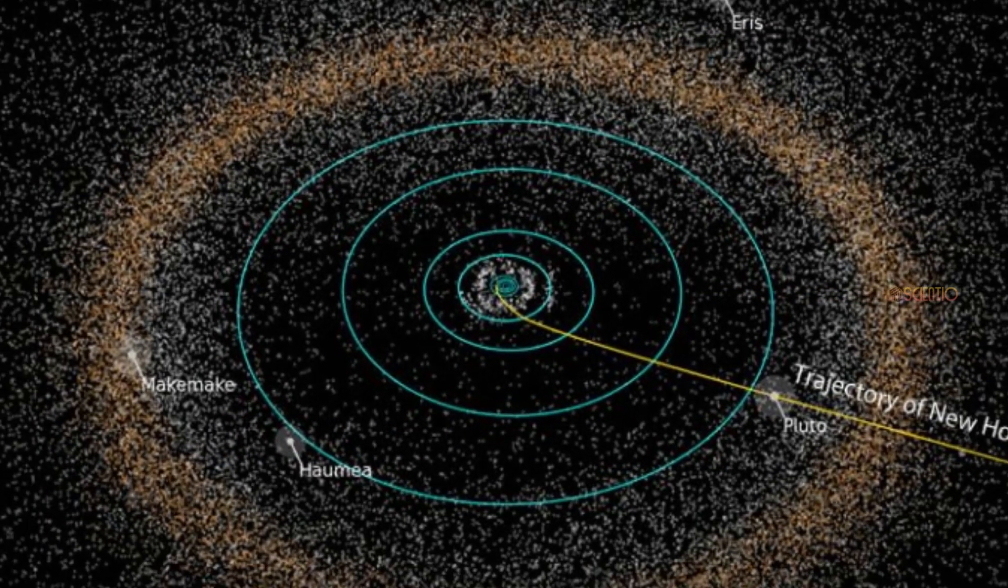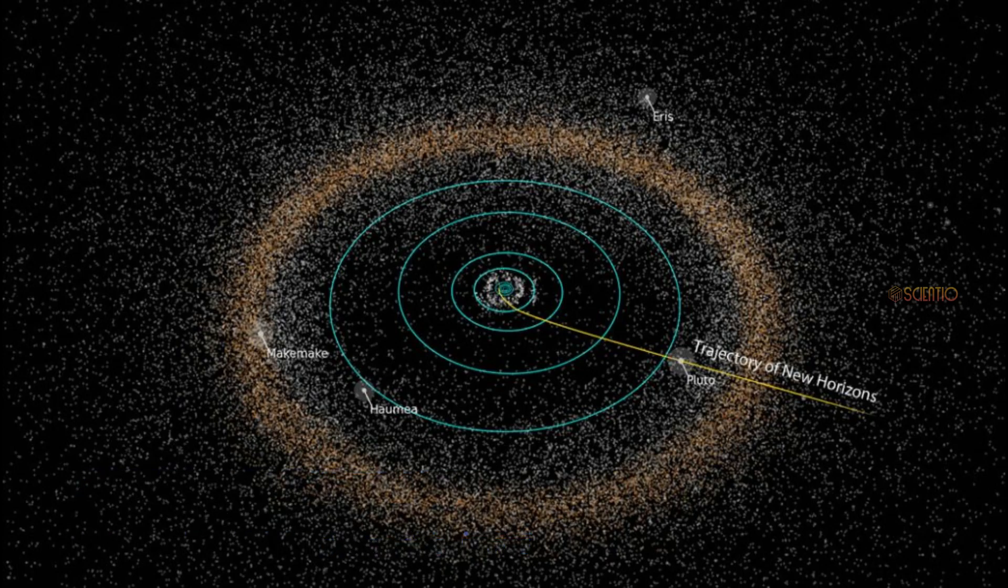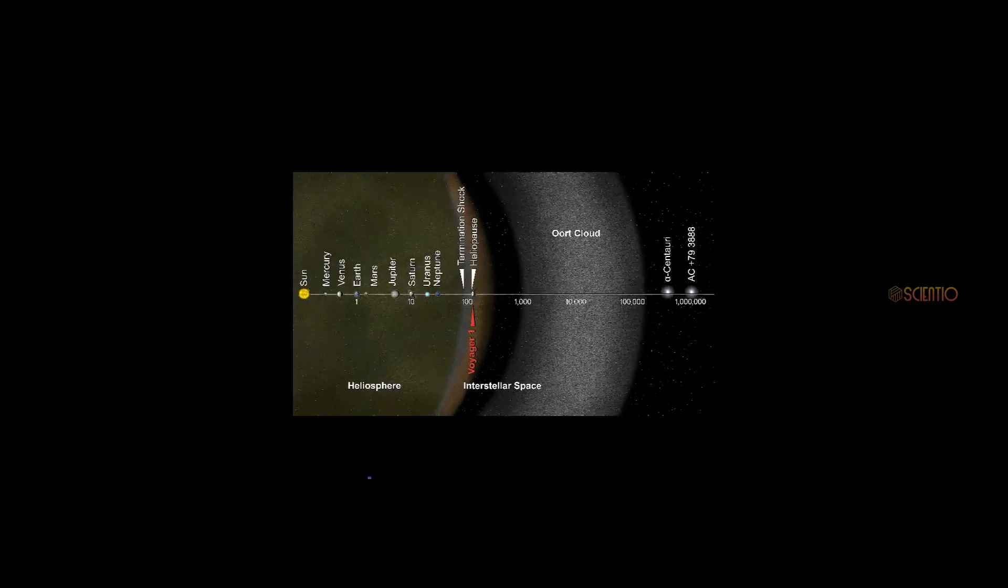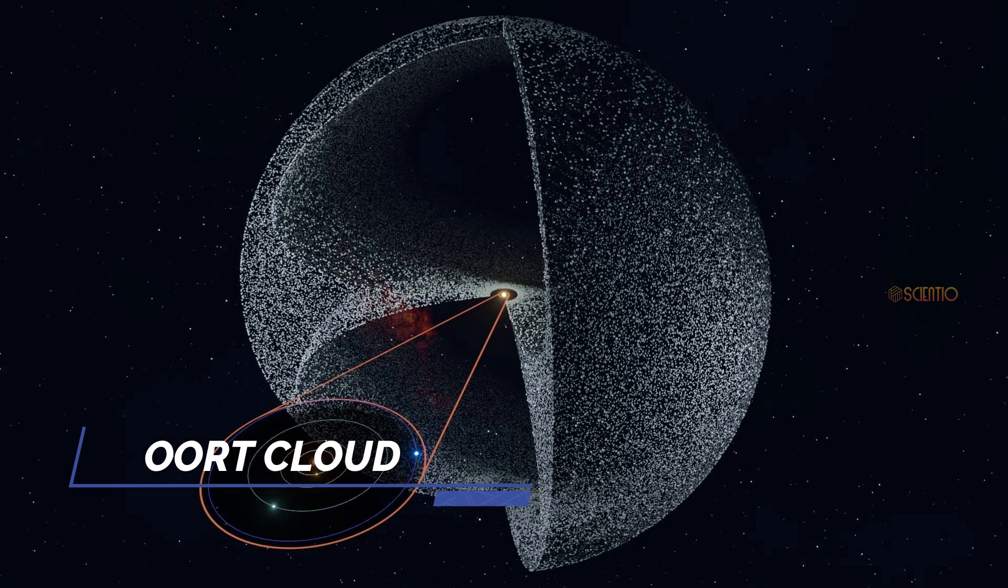At the speed of light, it would take us approximately 41 hours to cross the Scattered Disc. At the speed of light, it would take us about 30,000 years to cross the Oort Cloud. So the time needed to travel from the Scattered Disc to the Oort Cloud would also be approximately 30,000 years.